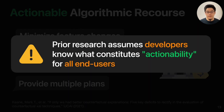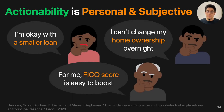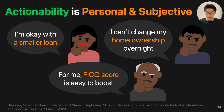However, those research approaches assume that developers know what counts as actionable for all end users — and in practice, that is not true. Actionability is personal and subjective. For example, some applicants may be okay with a smaller loan amount, but others may not. Some applicants cannot change their home ownership overnight, while for others it may be easier to boost their FICO score. Actionability varies from user to user, and there is a dire need for a system that provides tailored, personalized recourse to different end users.